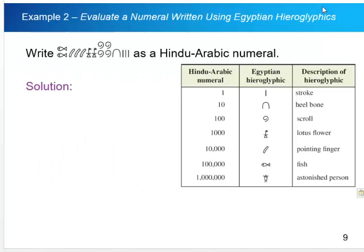Say if we wanted to go this way, if we've written it out with Egyptian hieroglyphics and wanted to go back to Hindu-Arabic, we would look at how many of each symbol we have, and that would tell us the value too.